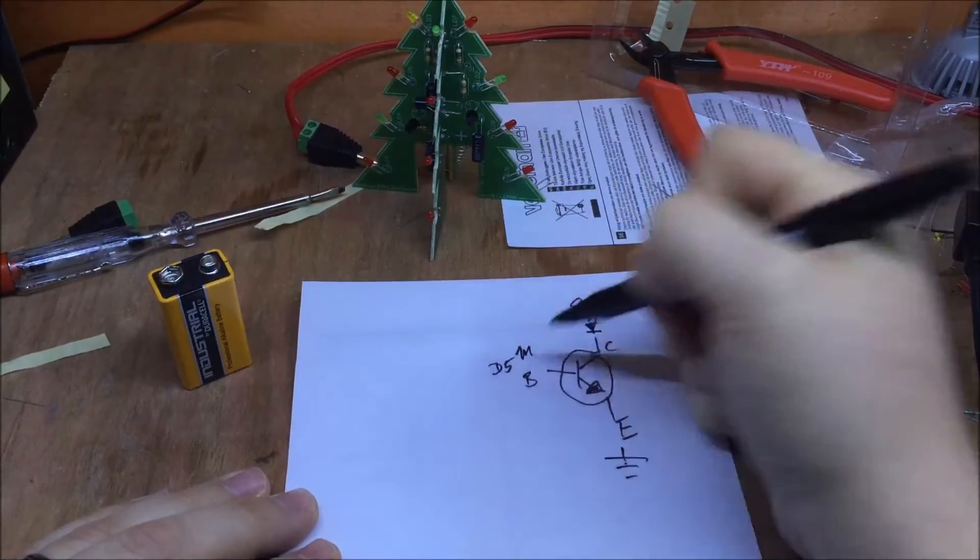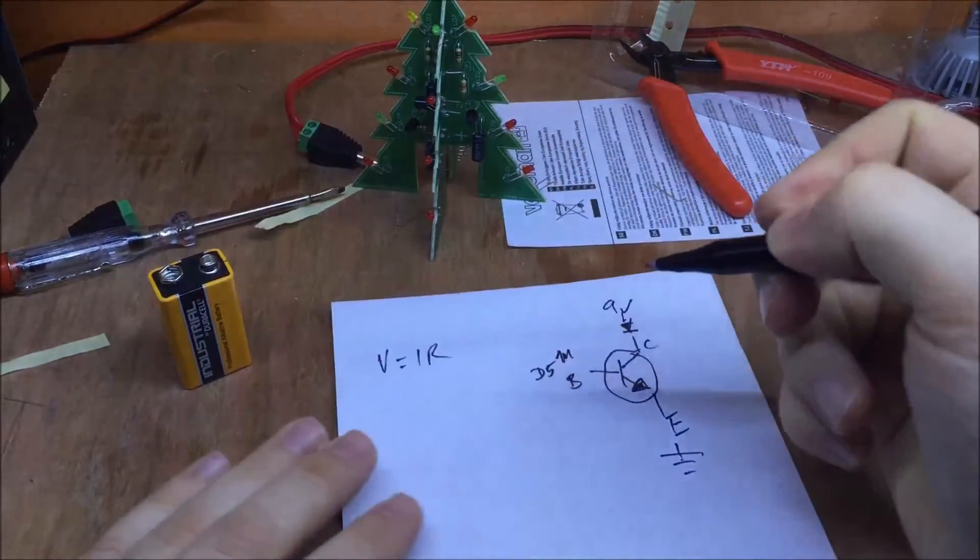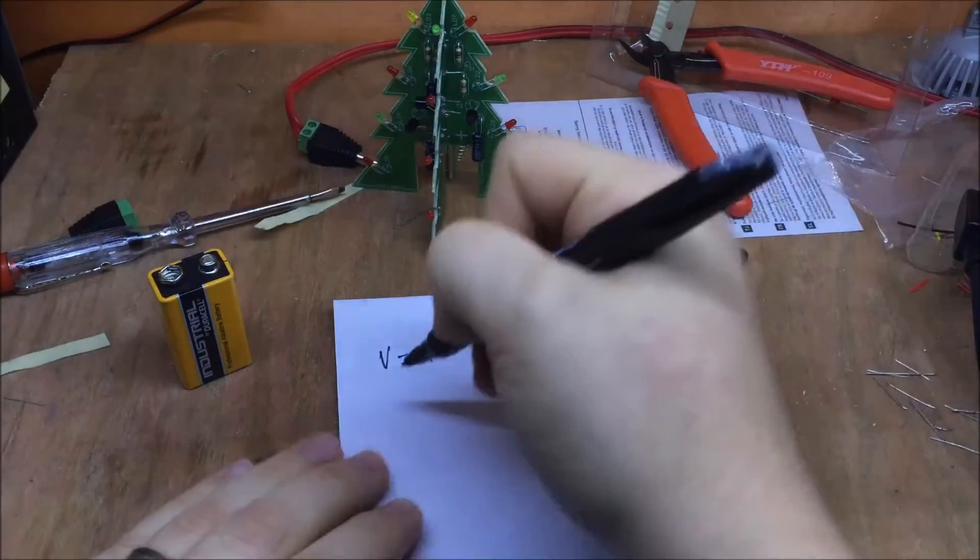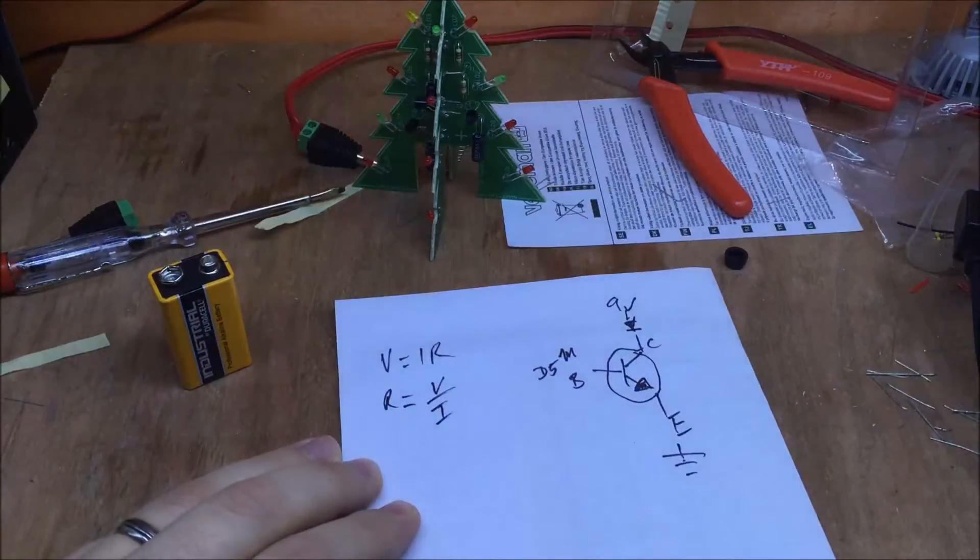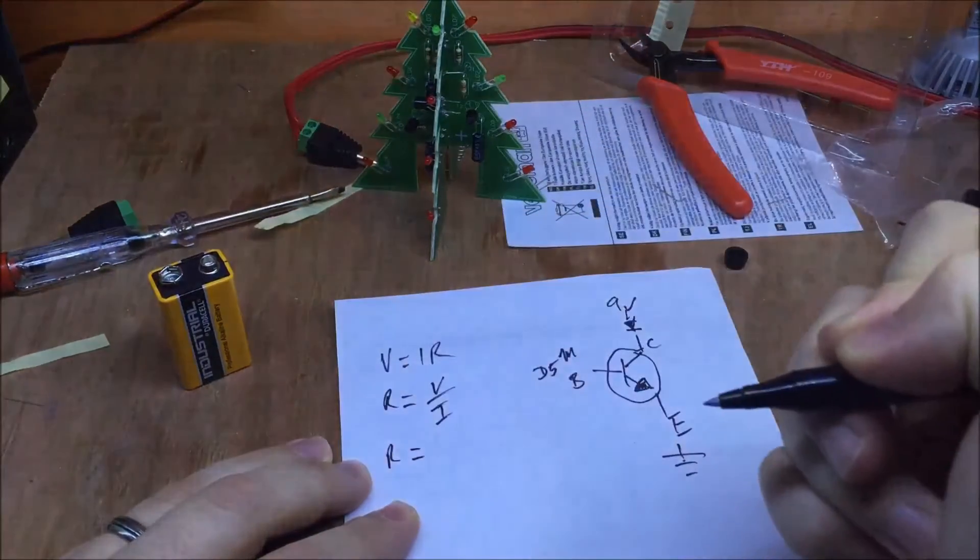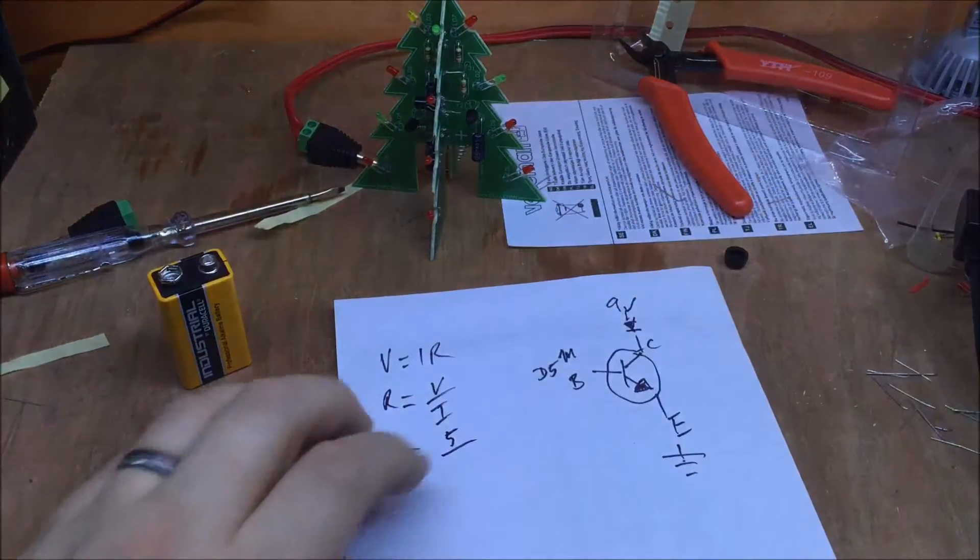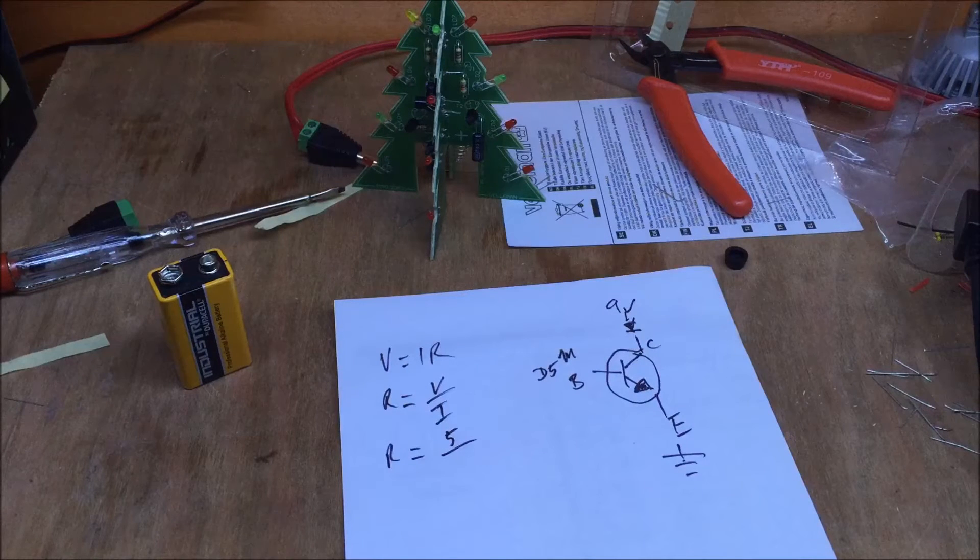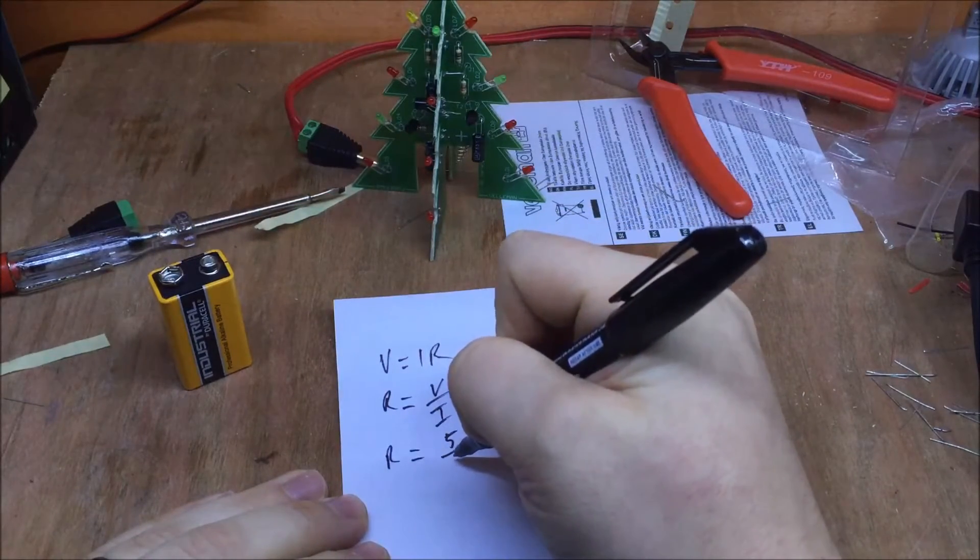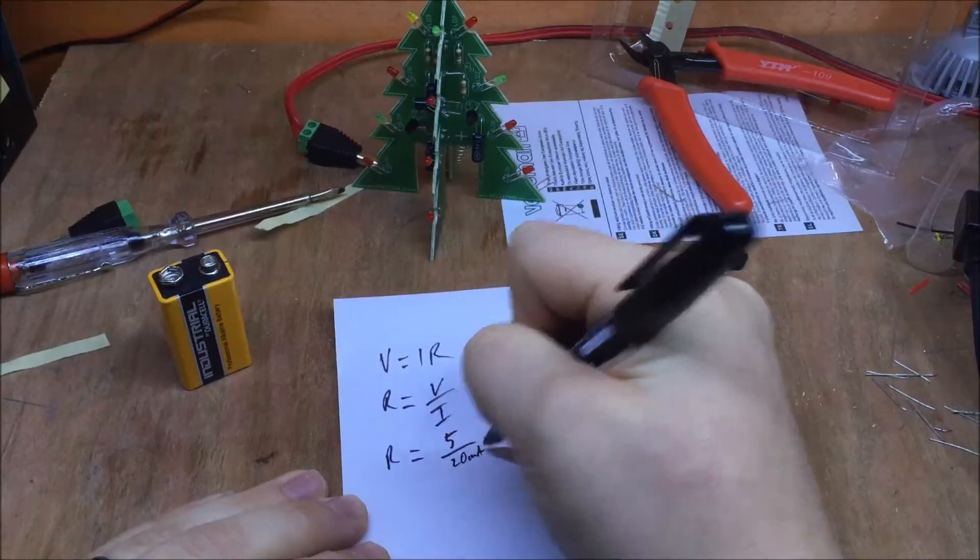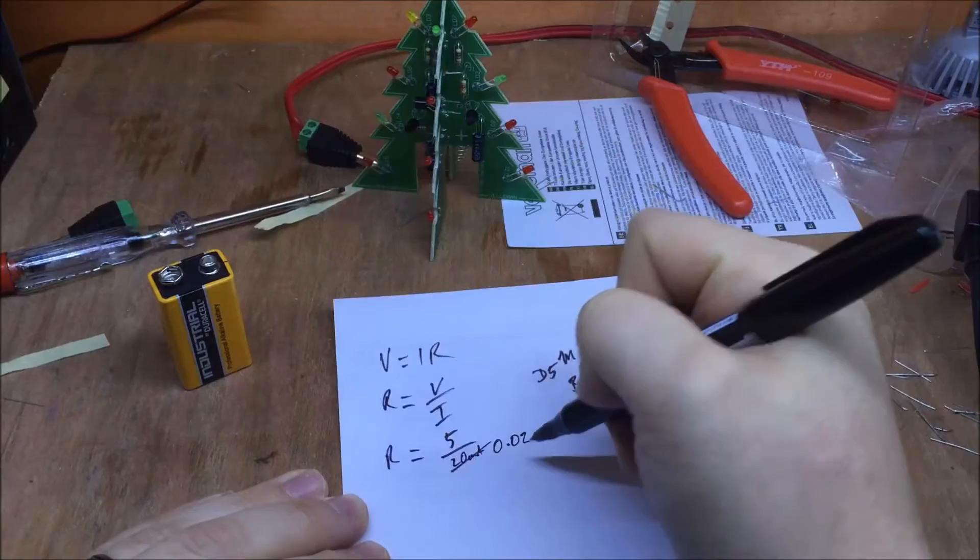So I need a resistor in there. V equals IR, Ohm's law, which means that R equals V over I. So R equals 5 divided by, now each Arduino pin can do I think it's 40 milliamps, but to be on the safe side, let's try 20 milliamps, which is 0.02 amps.